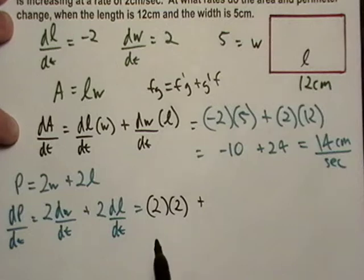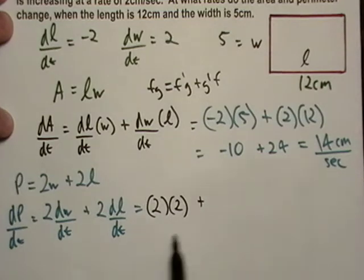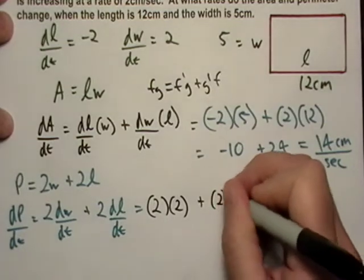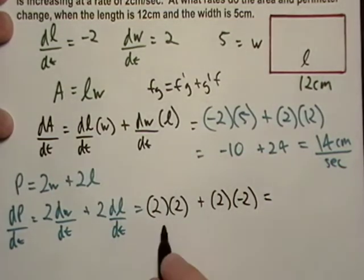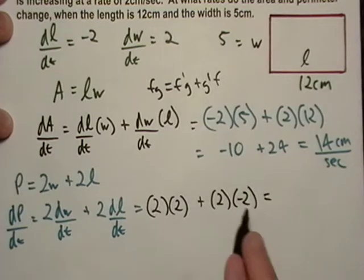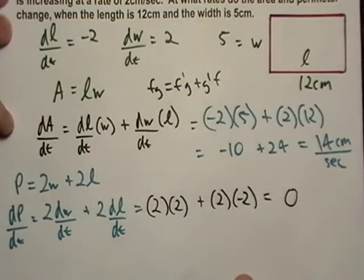One of them is increasing at the exact opposite rate as which the other one is, so hopefully if we did everything right, it should end up working out. So then we get two, and dl, looks like we're good, because we get four plus negative four equals zero.